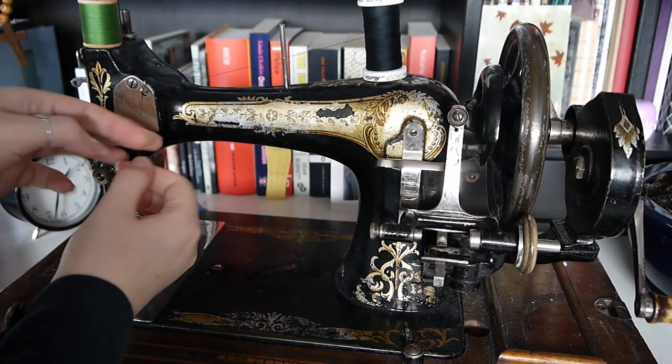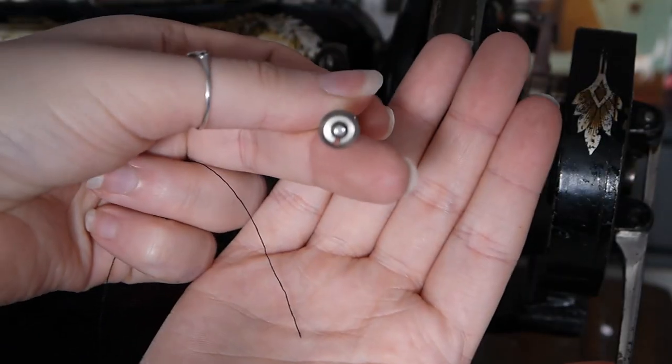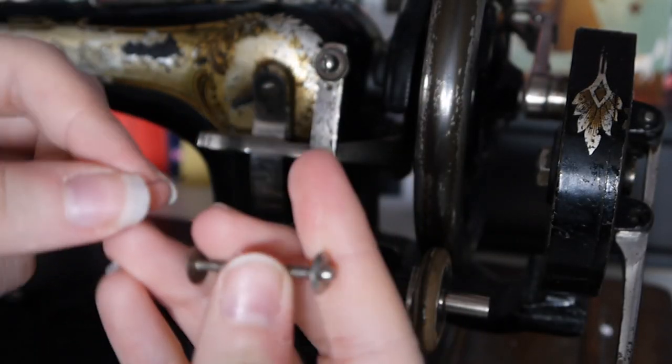To wind your bobbin, pull the thread so it only goes through the top eye of your sewing machine. Find the hole in your spool and stick the thread through from the inside out.